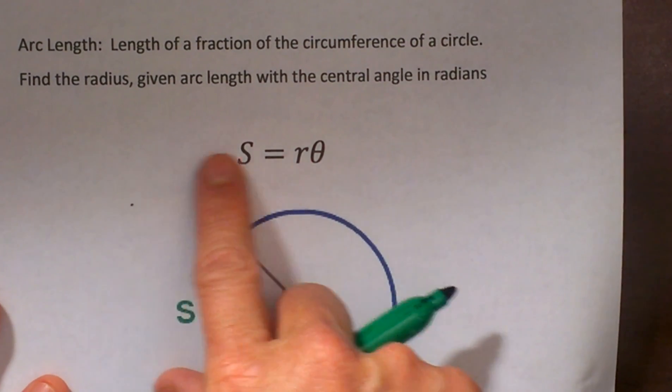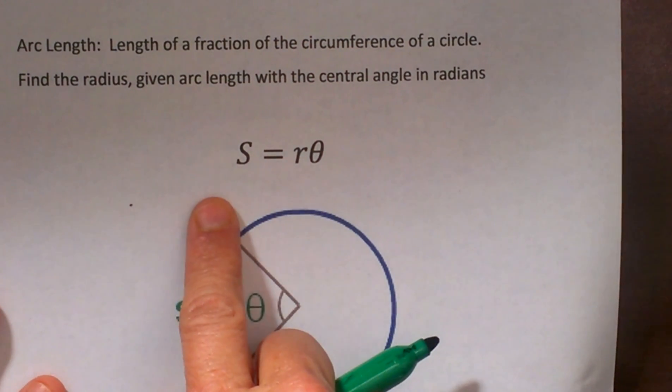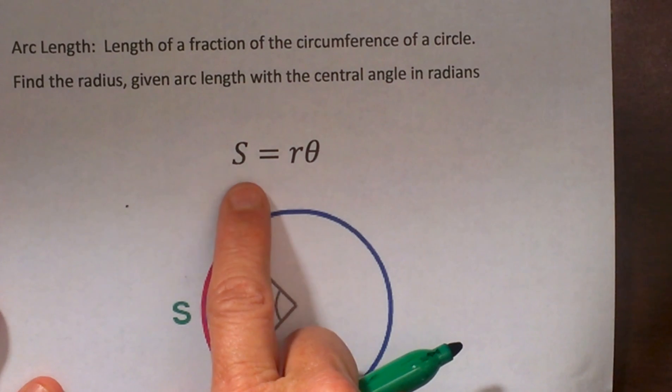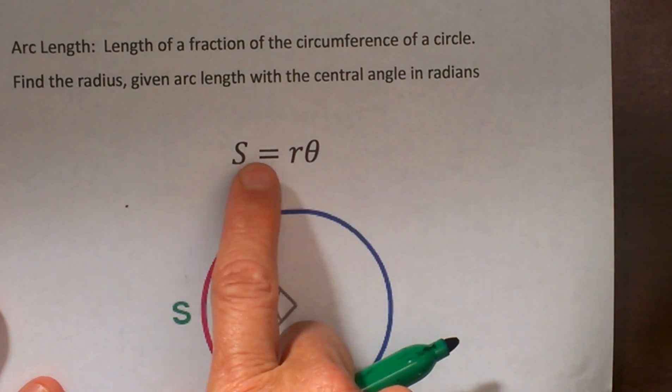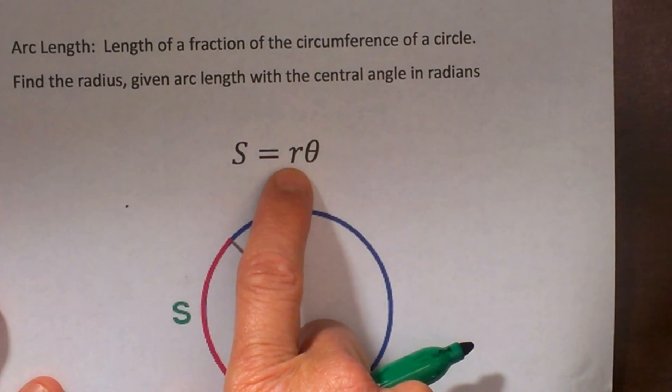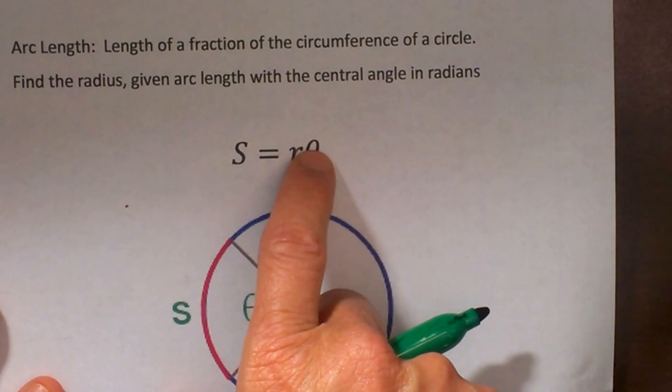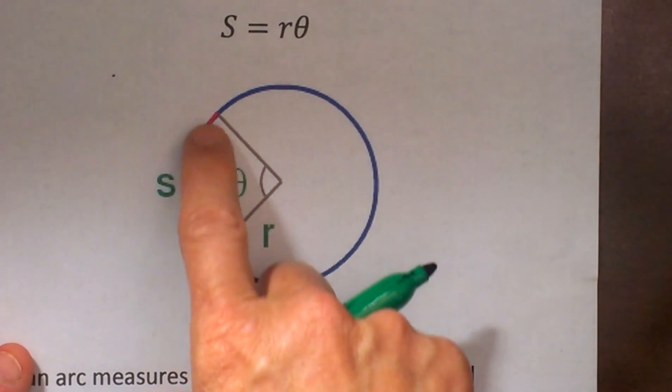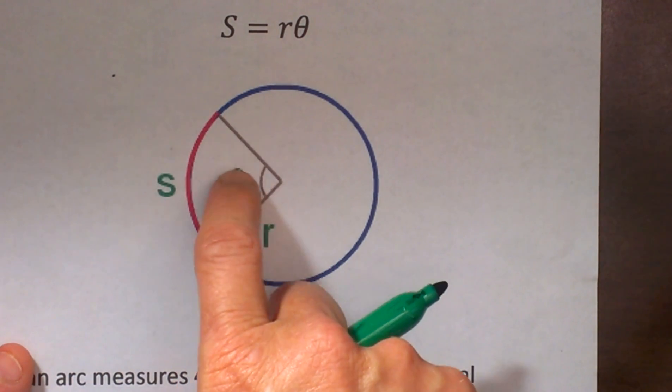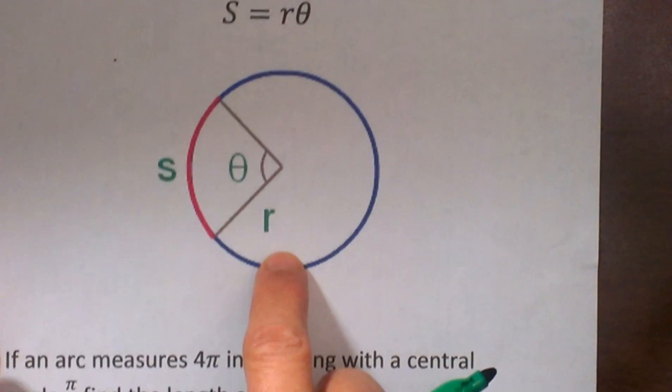The first way we are going to look at it is in terms of radians. This is the formula you use for radians. To find the arc length S you have to multiply the radius times the angle in radians. So here is our formula where S is the arc length, theta is our central angle and R is our radius.